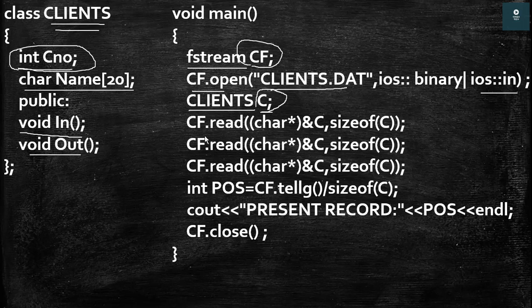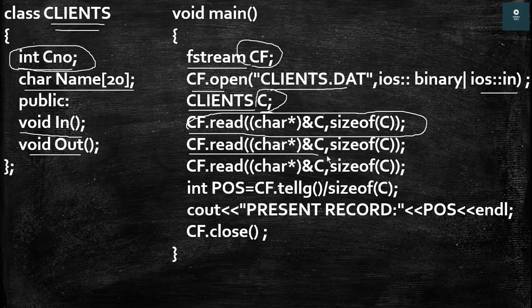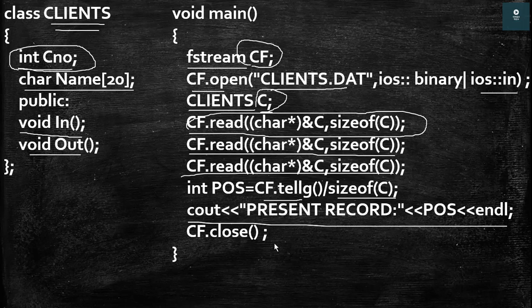Then in the next line we are reading the object from the file. The first object of the file is read, then the second object is read, and then the third object is read. After that we are doing some calculation based upon the tellg function and the sizeof function. Then we are giving the output and then we are closing the file.